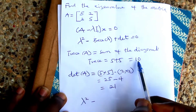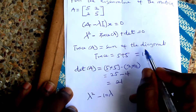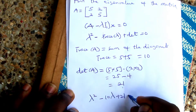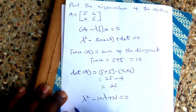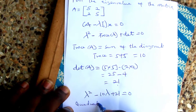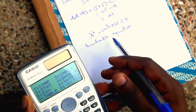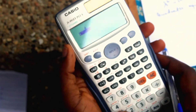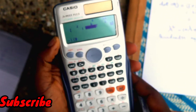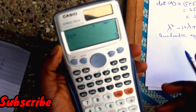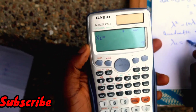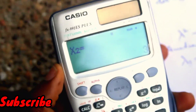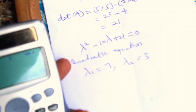So the equation becomes lambda squared minus ten lambda plus 21 equals zero. On the calculator, go to Mode, select 5 for equation, then 3 for quadratic. Enter coefficients: 1, minus 10, and 21. Solving gives lambda one equals seven and lambda two equals three — these are the eigenvalues of the matrix.